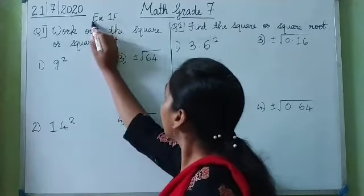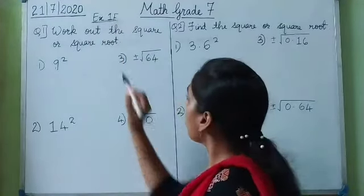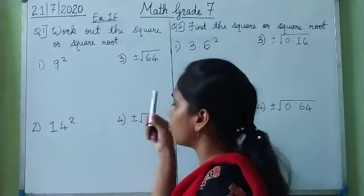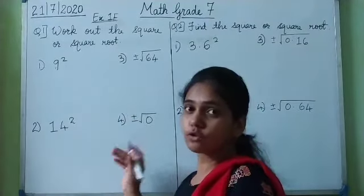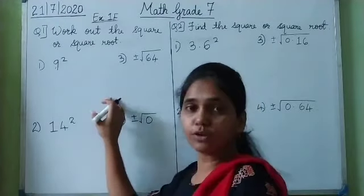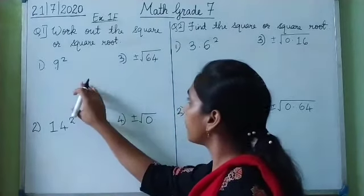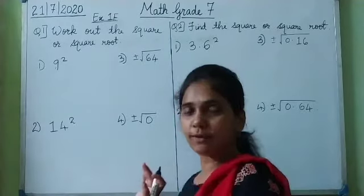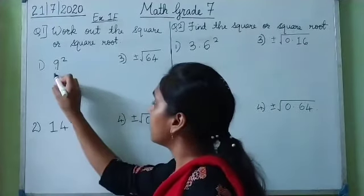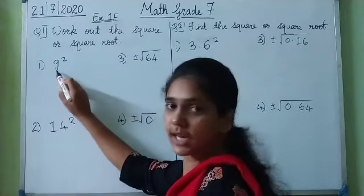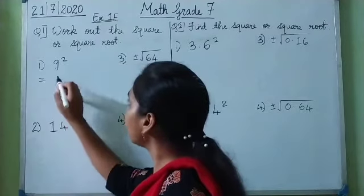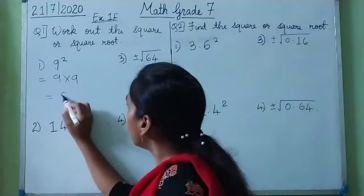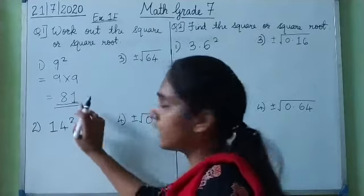Now we will solve exercise 1f. The first question is to work out the square or square root — work out means to solve these sums without using a calculator. Wherever you are told to find the square, you find the square, and wherever you are told to find the square root, you find the square root. The first sum: we have to find the square of 9. So 9 squared means 9 into 9. 9 nines are 81, so the square of 9 is 81.